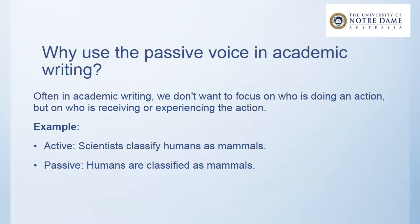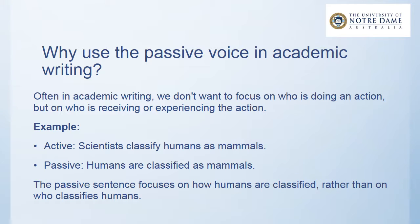Remember, we need the subject — which in our passive sentence becomes 'humans' — we need the present tense form of the verb 'to be', and we need the past participle of 'classify'. Humans are classified. This passive sentence focuses on how humans are classified rather than on who classifies humans. In this case, it's quite clear already that we are talking about scientists, so we take the focus off of the scientists and put it instead on the way the humans are classified.